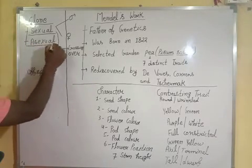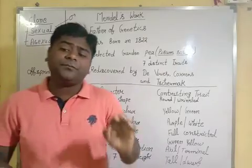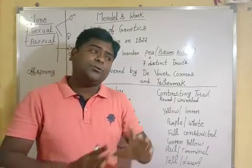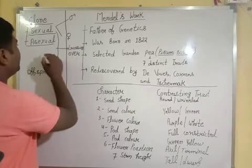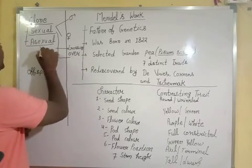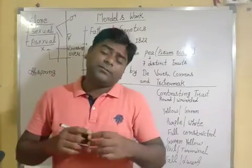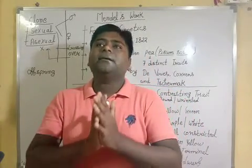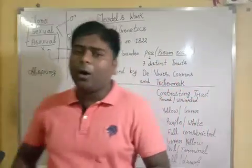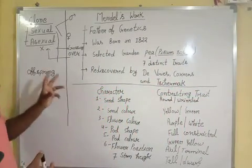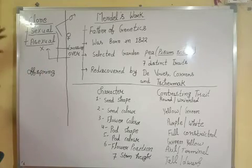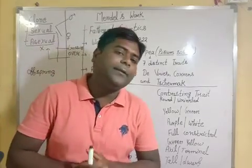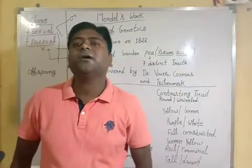When we have asexual reproduction, there is an involvement of only a single parent. There is no gamete formation, and when there is no gamete formation, there is no crossing over. In case of asexual reproduction, there is no crossing over. And whatever progenies are formed, they are exactly like parents. These progenies we call clone — identical copies are known as clone.